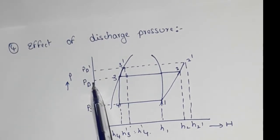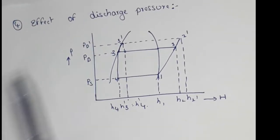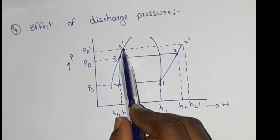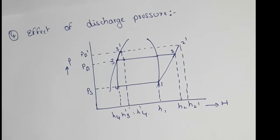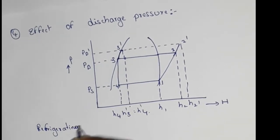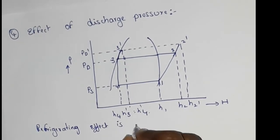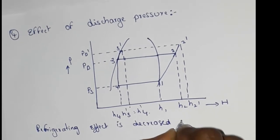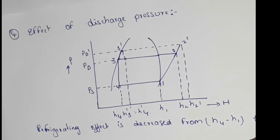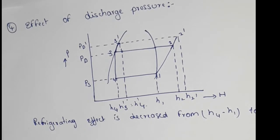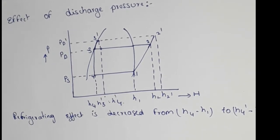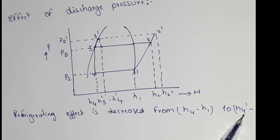When we increase the discharge pressure to PD dash, the volume increases from Mo2 to 2. The refrigeration effect is decreased from H4 minus H12 to H4 minus H1.